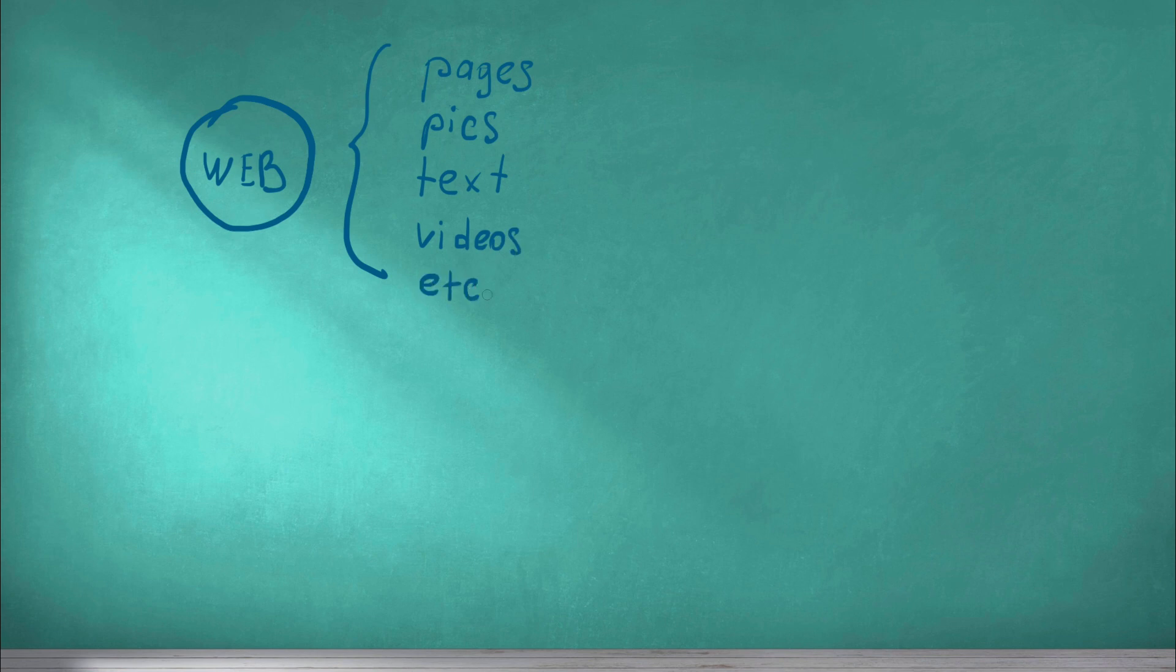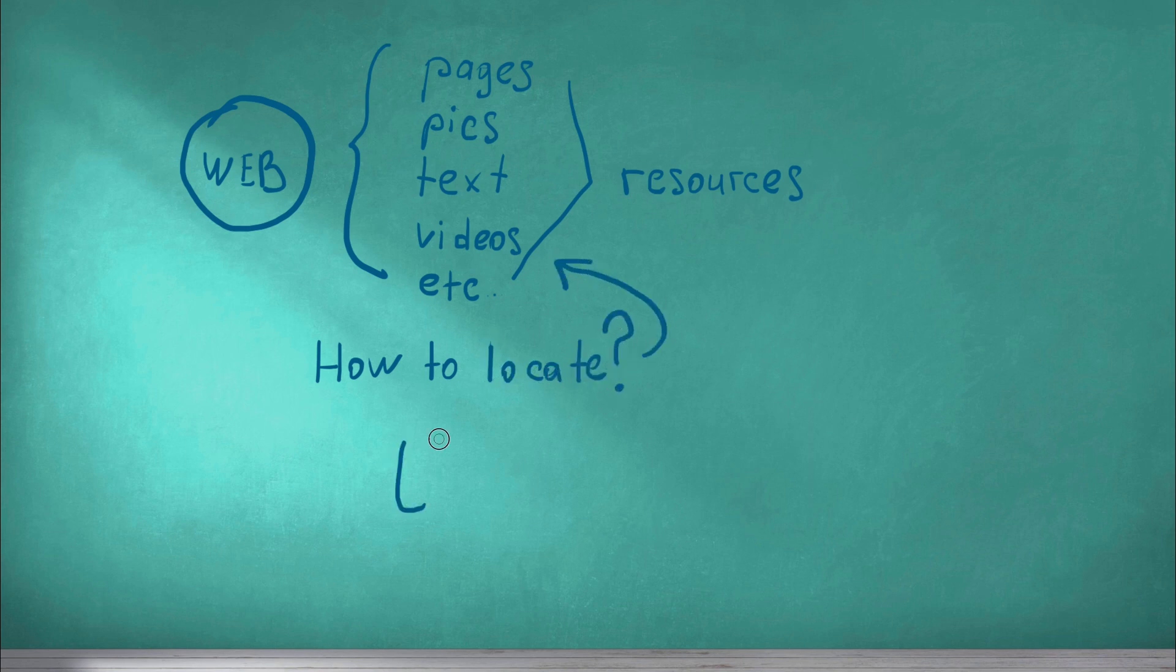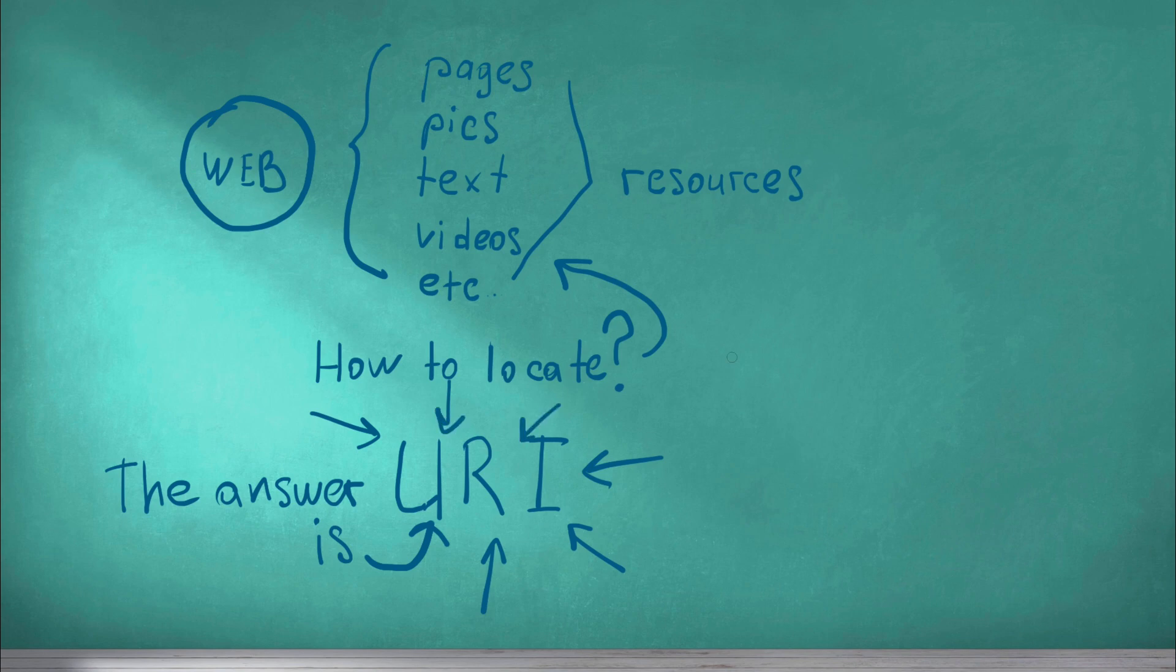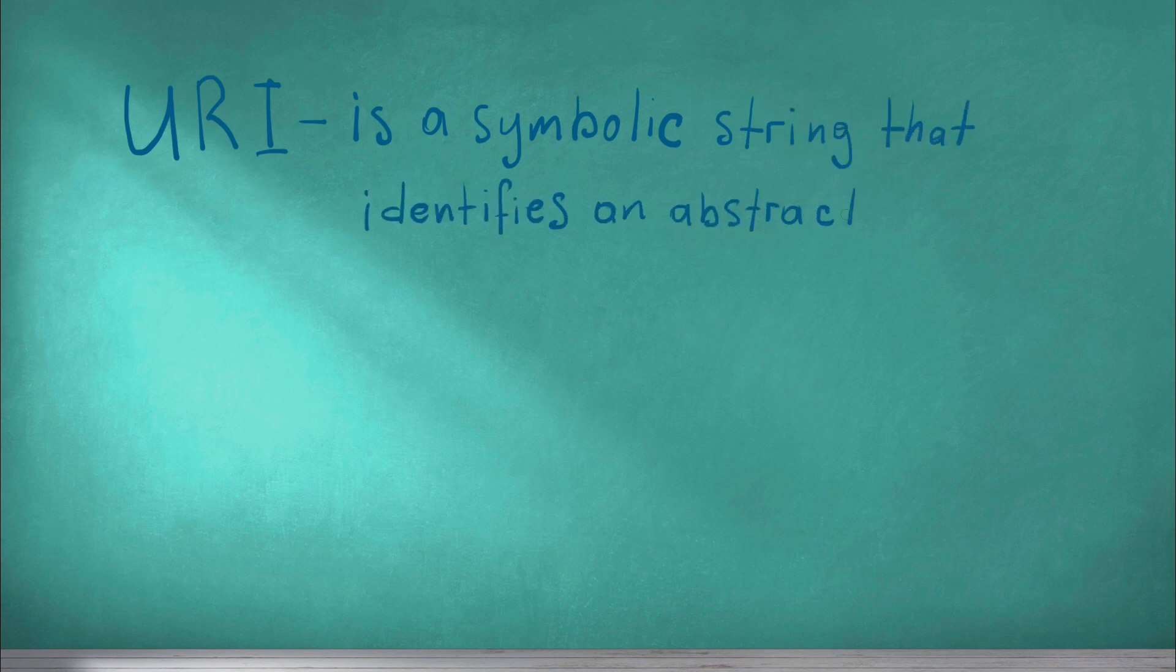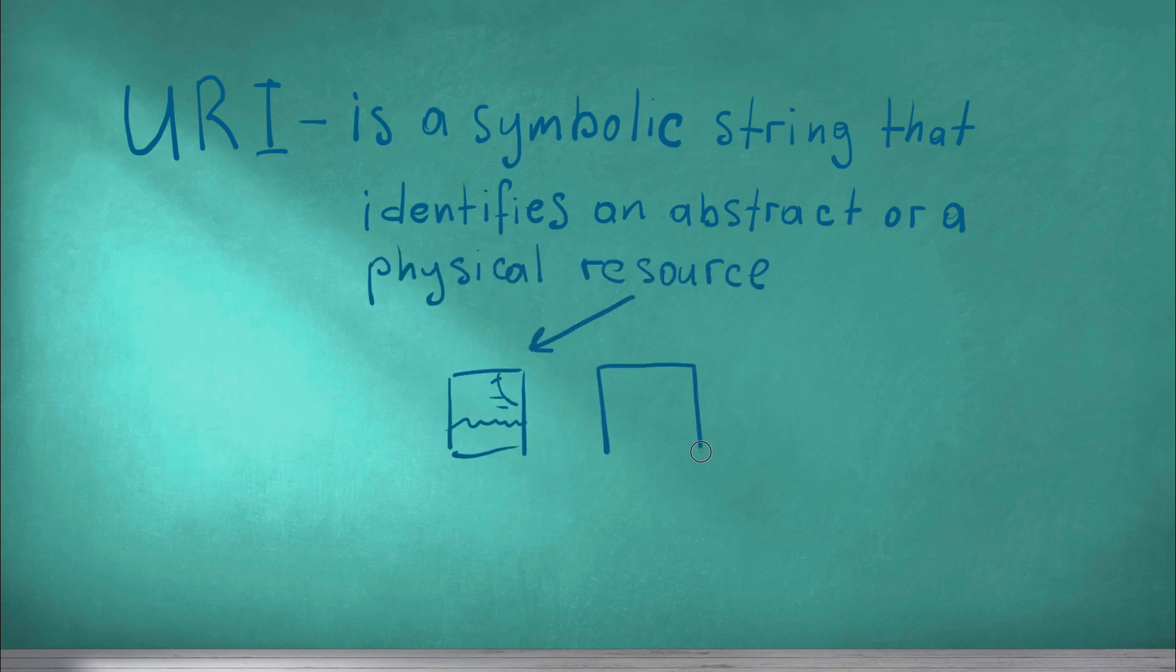We now understand that every element on the web can be considered a resource. How do I locate a specific resource? To locate the required resource, we need its specific address. The URI or Uniform Resource Identifier is used here. A URI is a symbolic stream that identifies an abstract or a physical resource such as a document, image, or service.